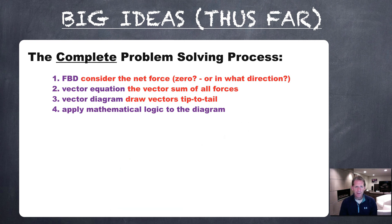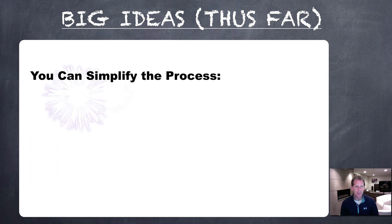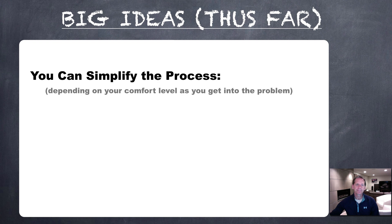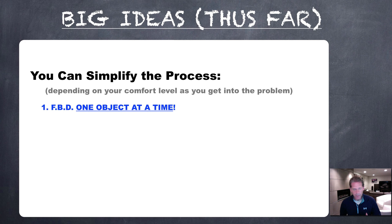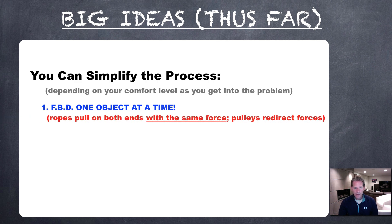Otherwise, from what we did in our last screencast, you can simplify the whole process. This depends on your comfort level. The two key things: first, you'll still make that free body diagram very carefully, focusing on just one object at a time. You might not pick the ideal object to begin with — that's fine, just try another if it's not emerging the way you'd like. When drawing vectors, remember ropes pull on both ends with the same force, and pulleys don't change the size of the force — they just redirect it. The tension is the same all the way through the rope.